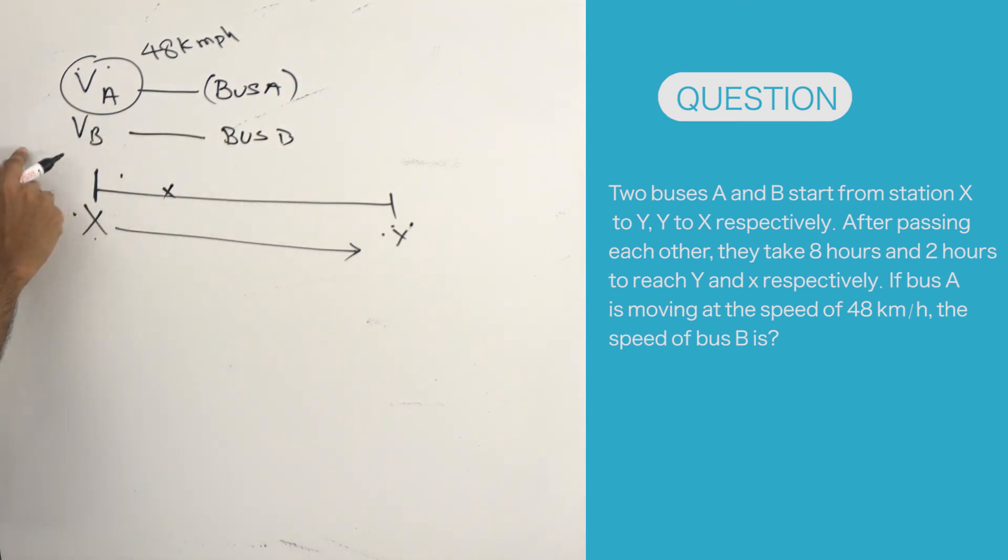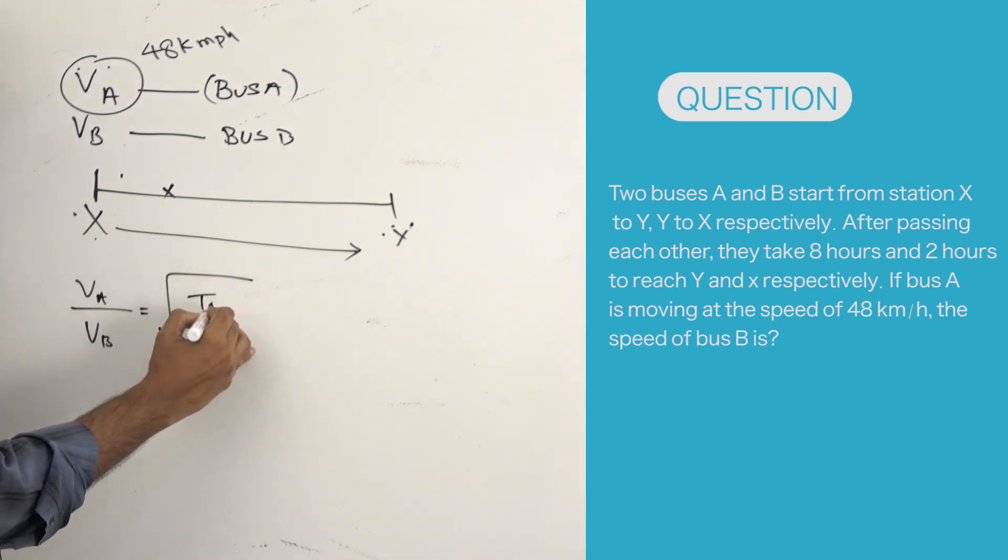Here we can answer this question in five seconds if you know one simple formula: V_A/V_B equals the square root of T_B/T_A. Here, T_B and T_A are the time taken for reaching their destination after crossing each other.